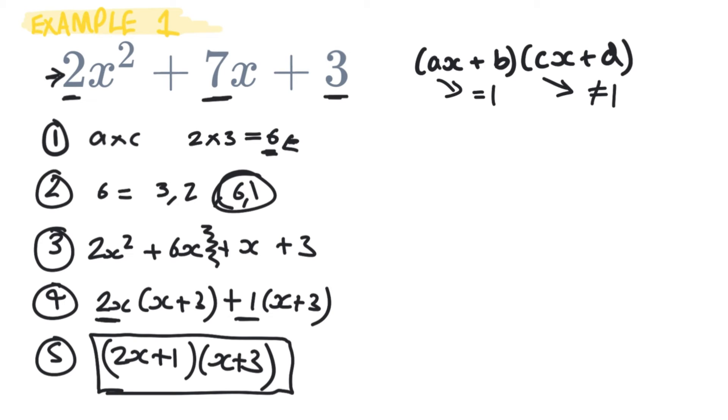Now before we move on to any more examples I want to show you the fact that it really does not matter which way you write it around. Because I used to be quite worried that I'd get it wrong. But it really does not matter which way you write it. So if we rewrite this slightly differently we can write it as 2x² + x + 6x + 3.